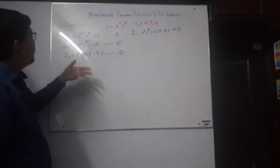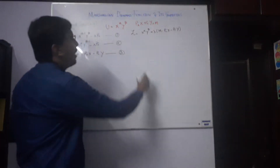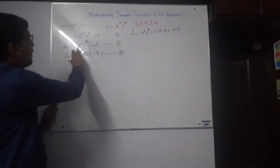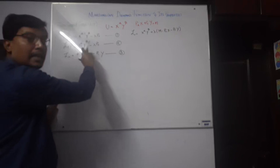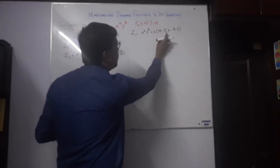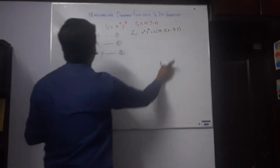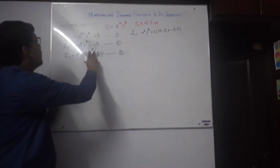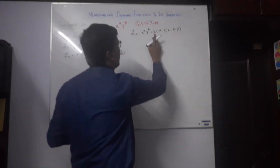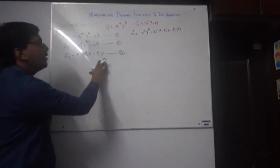The second equation takes the partial derivative with respect to Y. The power of Y is beta, so beta comes to the base giving X to the power alpha times Y to the power beta minus 1. The other terms are zero because they are constants with respect to Y, leaving minus lambda Py. The third equation takes the derivative with respect to lambda, giving M minus PxX minus PyY.